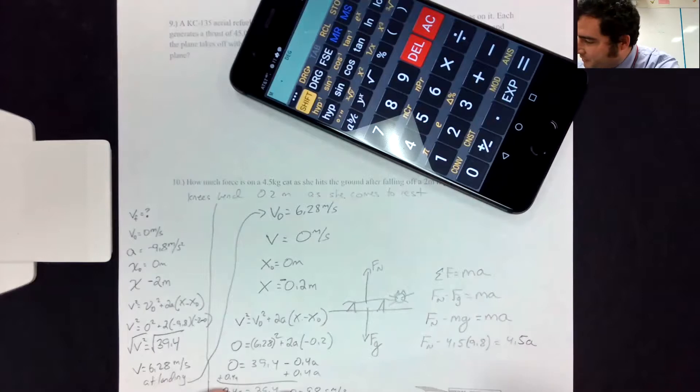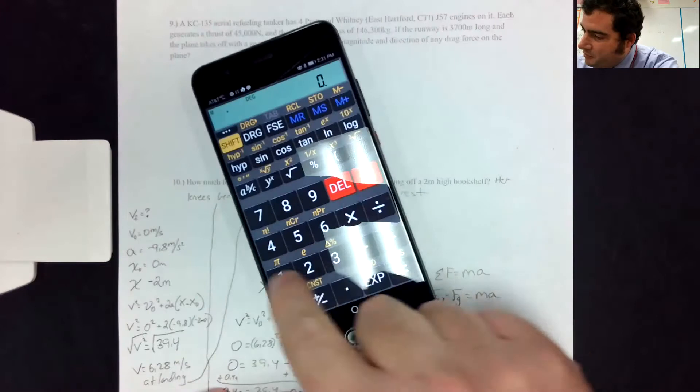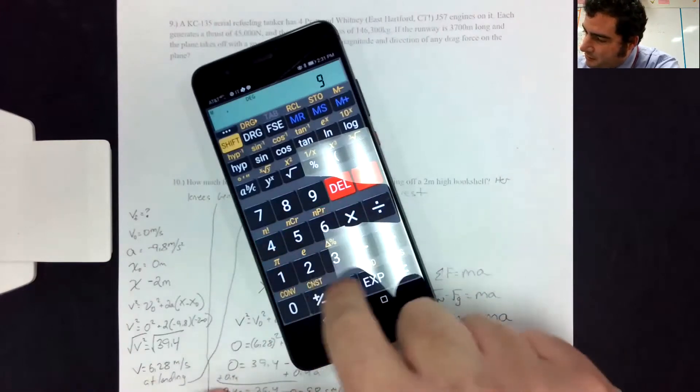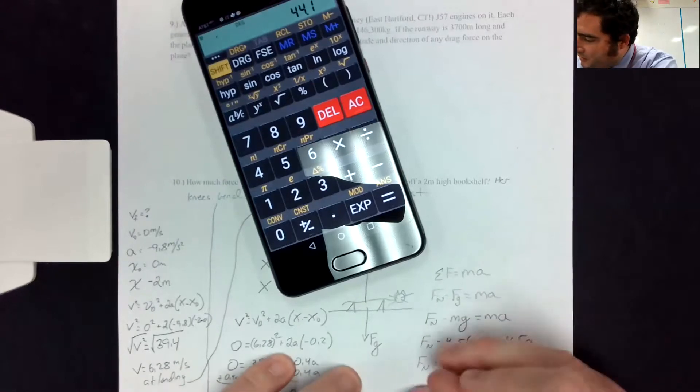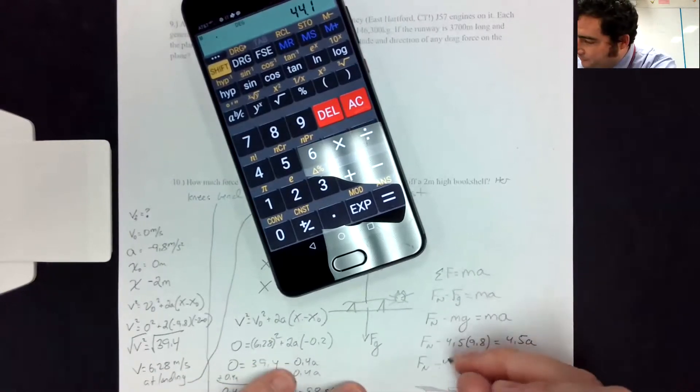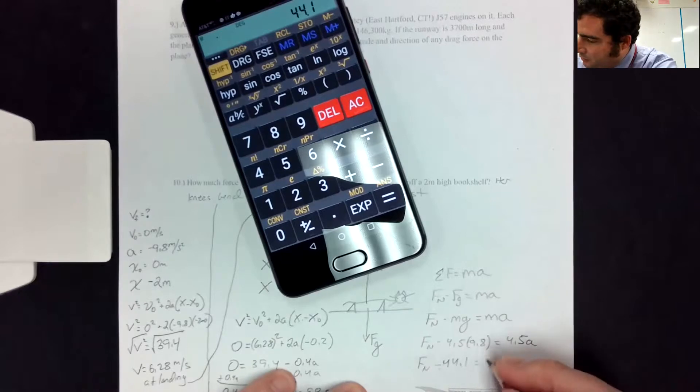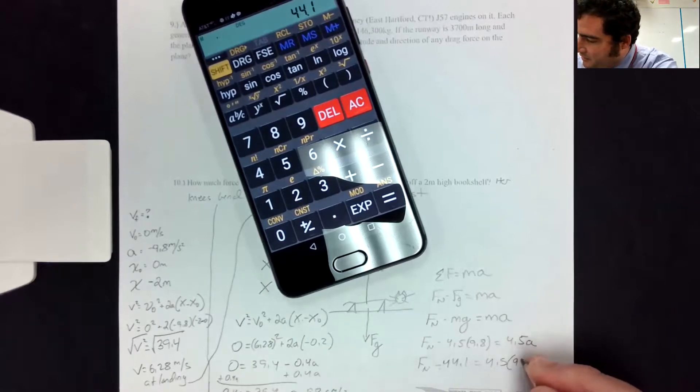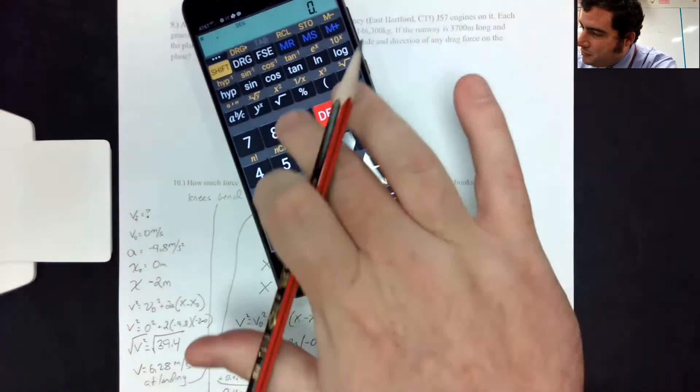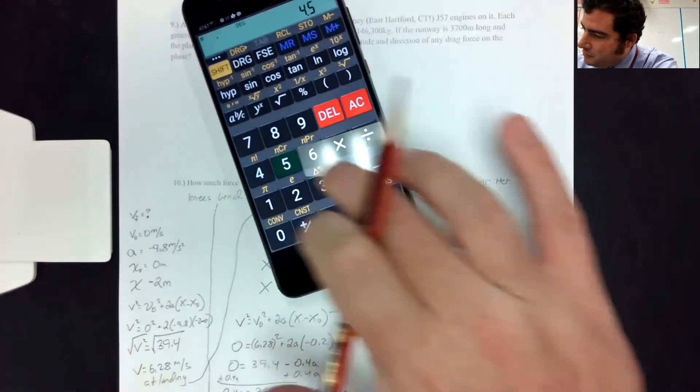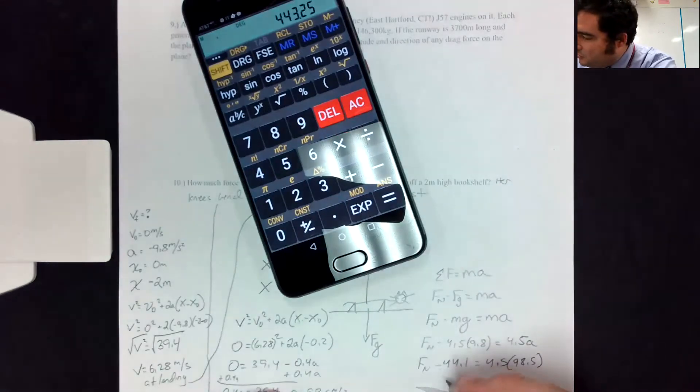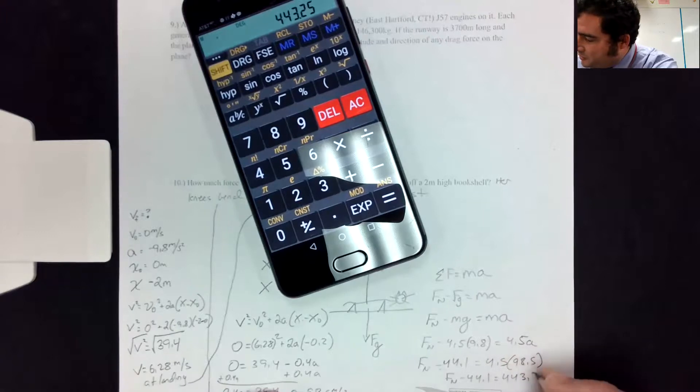So Fn is 4.5 times 9.8. Excuse me. Fn minus 44.1 equals 4.5 times 98.5. So Fn minus 44.1 is 443.25.